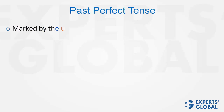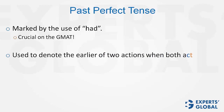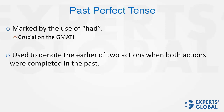Past perfect tense, marked by the usage of 'had,' is crucial on the GMAT. Past perfect tense is used when a sentence has two actions in the past and one action happens more in the past. The past perfect form, marked by the usage of 'had,' is used with the action which is more in the past.